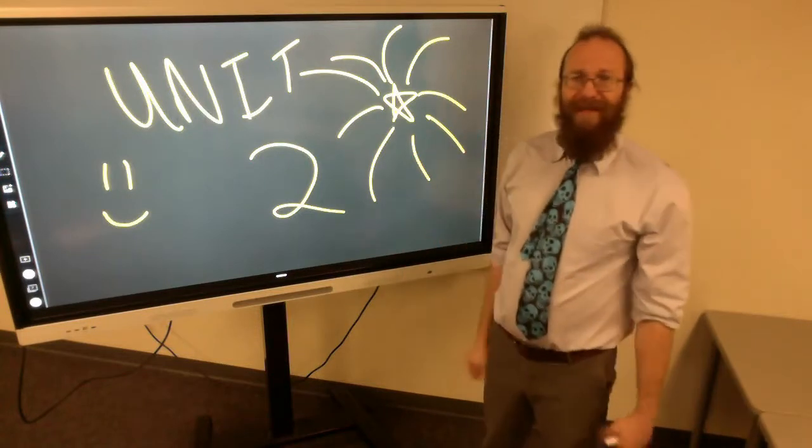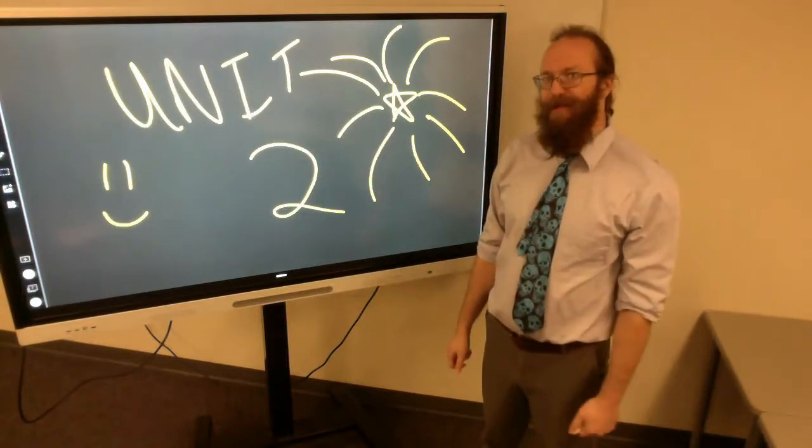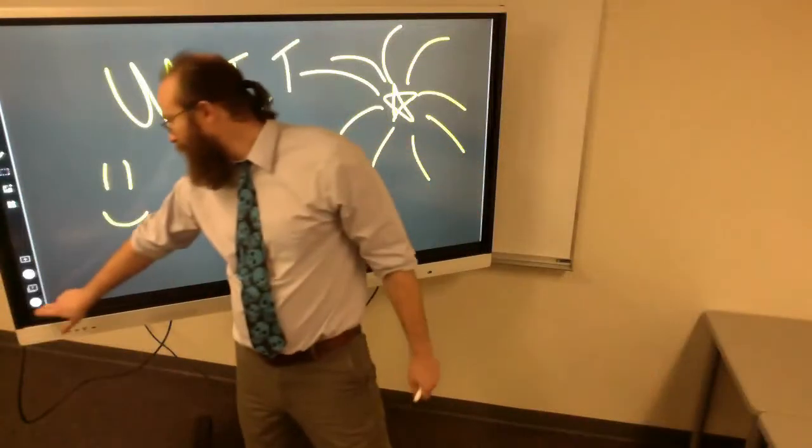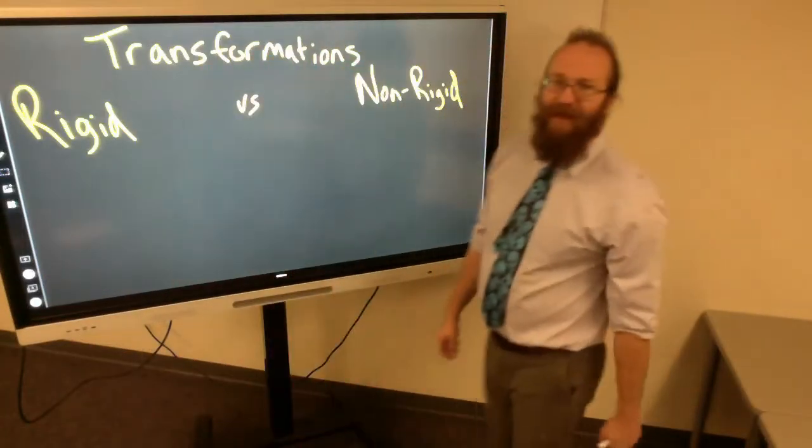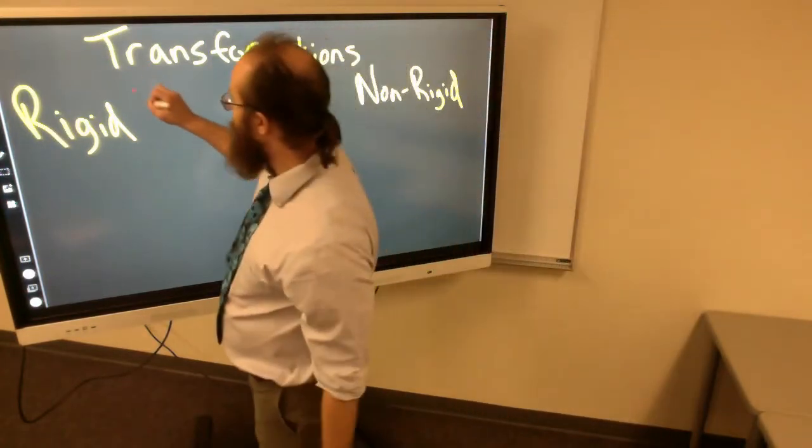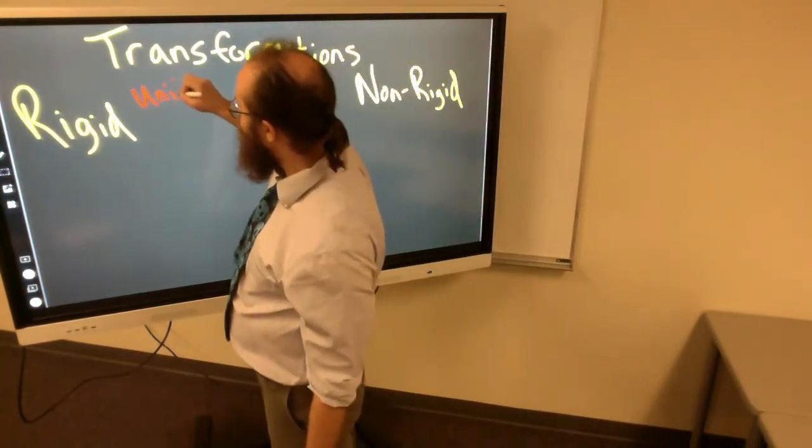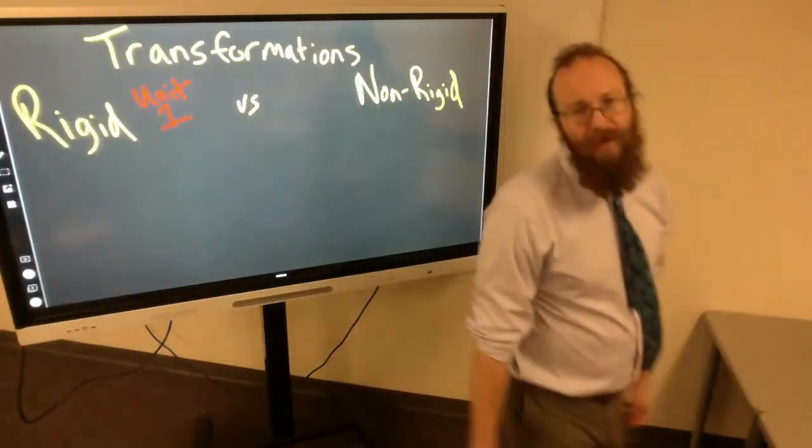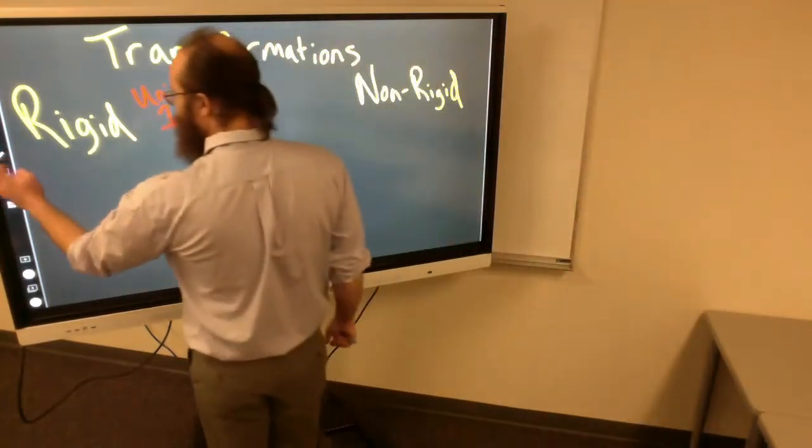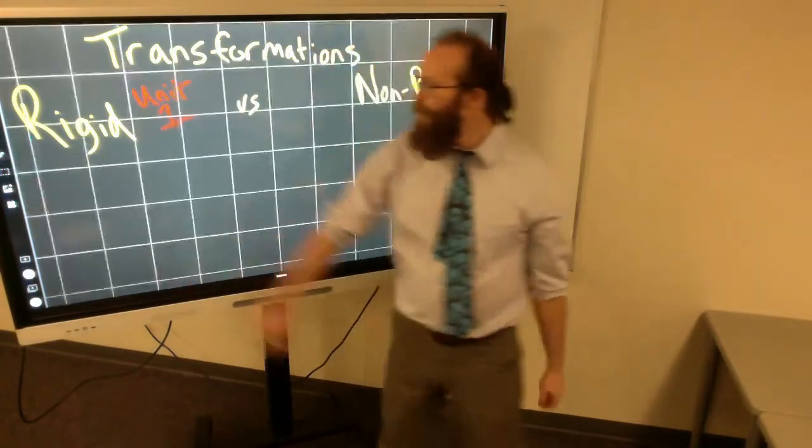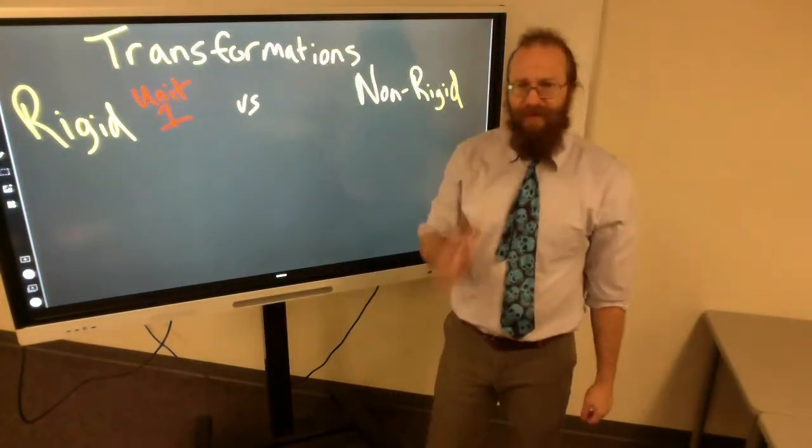Unit two has a new kind of transformation that we're going to talk about. So first we have to talk about rigid and non-rigid transformations. Unit one was entirely rigid transformations. So if you remember correctly what those rigid transformations were, I'll give you a second to think about it. What were the rigid transformations?